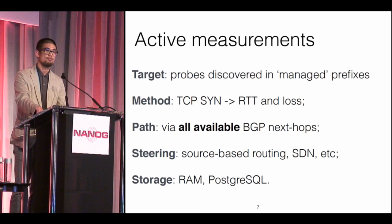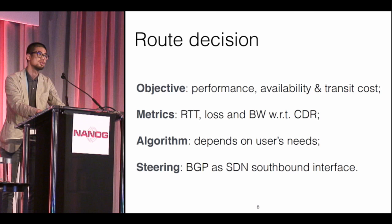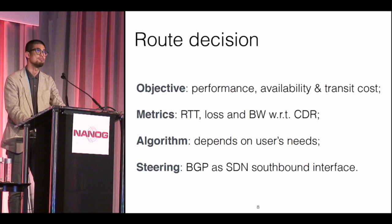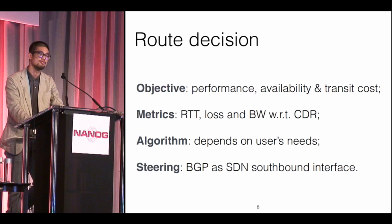Finally, there is the route decision: how we choose the best BGP next hop based on measurements. There could be multiple possible objectives, totally depending on the user's needs. For example, there could be users that are more performance-sensitive — like an online bidding system for advertisements — while others are more cost-sensitive.